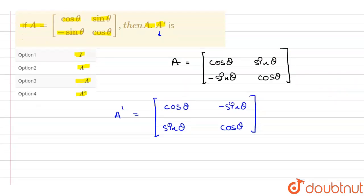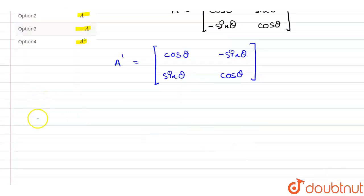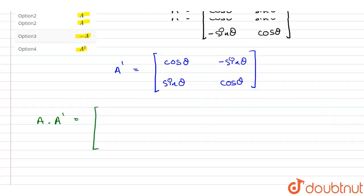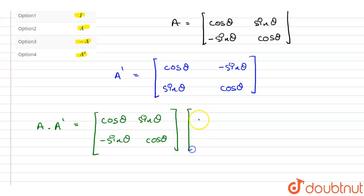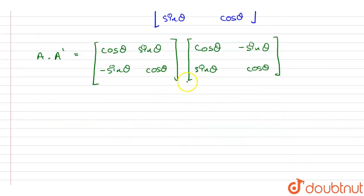Now we will be finding out A into A transpose. A multiplied by A transpose will be equal to matrix A, which is [[cosθ, sinθ], [-sinθ, cosθ]], multiplied by A transpose, which is [[cosθ, -sinθ], [sinθ, cosθ]]. Both are 2×2 matrices, so the resultant matrix will also be of 2×2 order.